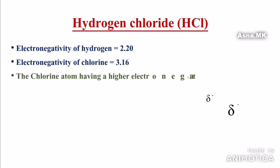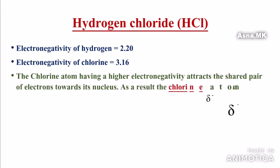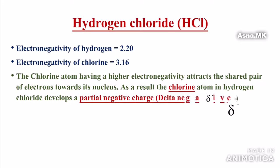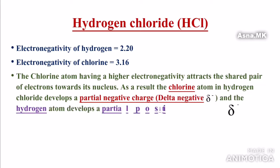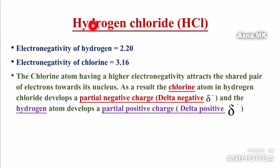The chlorine atom, having a higher electronegativity, attracts the shared pair of electrons towards its nucleus. As a result, the chlorine atom in hydrogen chloride develops a partial negative charge. Hydrogen chloride is a compound with different atoms — hydrogen and chlorine — with different electronegativity values.